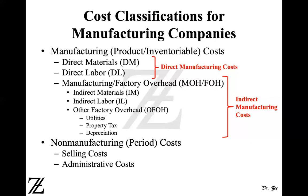If there is depreciation on a factory building, that is manufacturing overhead. But depreciation on an office building is not factory overhead — it's a non-manufacturing cost. A supervisor working in the head office is also not manufacturing overhead. Anything that has nothing to do with the manufacturing facility or plant can be considered a non-manufacturing cost, period cost, or operating expense.